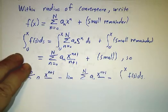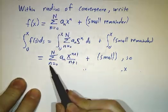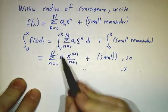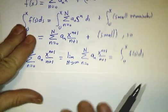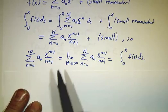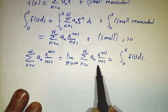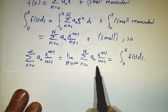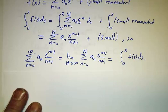And that means that as you take more and more and more terms, this expression gets closer and closer and closer to the integral. So the integral really and truly is given by the infinite sum. It's the limit of the finite sum as you take more and more and more terms, and by definition, that's the infinite sum. And that gives you the integral.